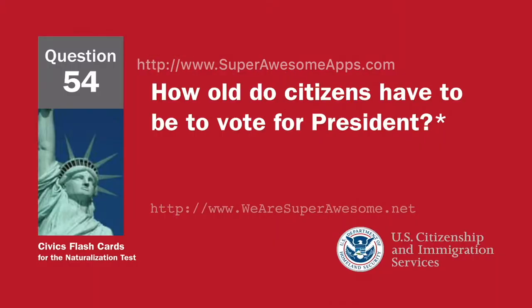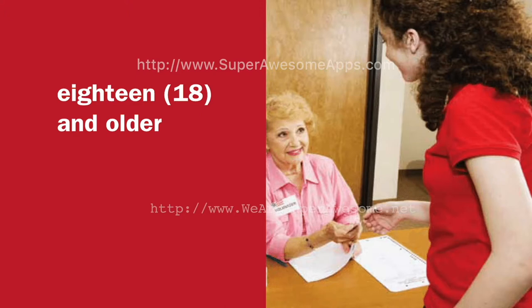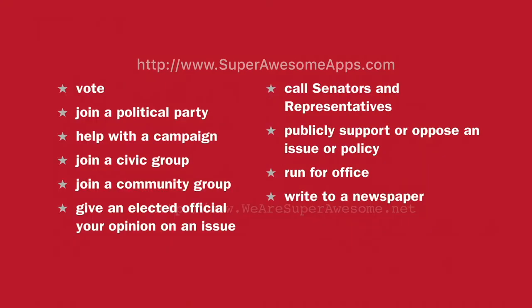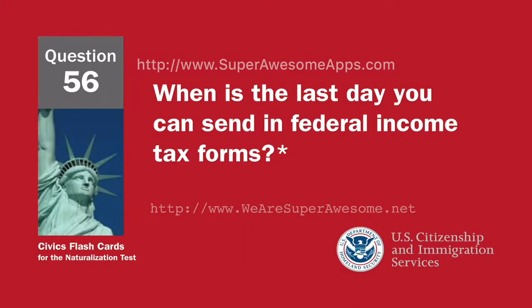How old do citizens have to be to vote for president? Eighteen and older. What are two ways that Americans can participate in their democracy? Vote. Join a political party. Help with a campaign. Join a civic group. Join a community group. Give an elected official your opinion on an issue. Call senators and representatives. Publicly support or oppose an issue or policy. When is the last day you can send in federal income tax forms? April 15th.